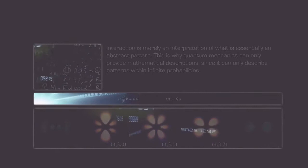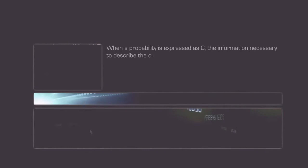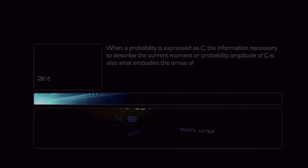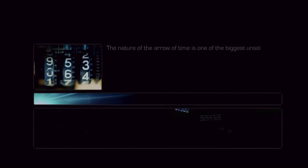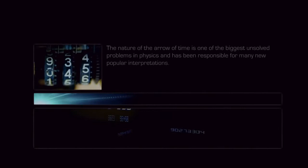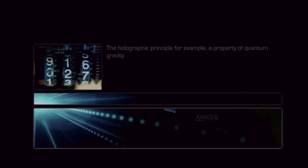When a probability is expressed as C, the information necessary to describe the current moment or probability amplitude of C is also what embodies the arrow of time. The nature of the arrow of time is one of the biggest unsolved problems in physics and has been responsible for many new popular interpretations. The holographic principle, for example, a property of quantum gravity and string theories, theorizes how the entire universe can be seen as an information structure of only two dimensions.